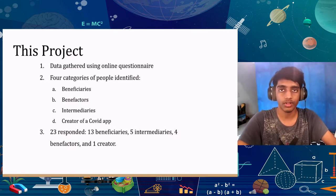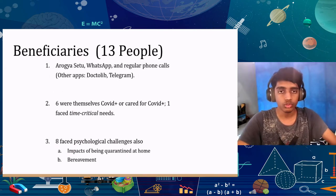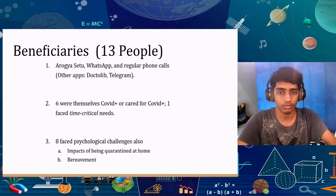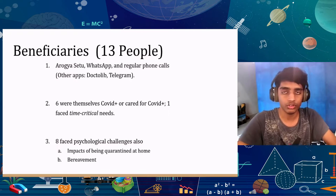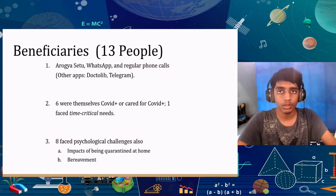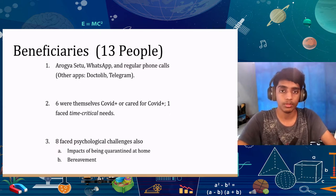Many beneficiaries mainly used Aarogya Setu, WhatsApp, and regular phone calls to communicate. Some even used apps such as Dr. Lib and Telegram. Six of these beneficiaries were either COVID positive or cared for someone who was. Only one faced a time-critical medical need — finding out about the virus and precautions. More than medical need, many faced psychological challenges as they were stuck at home, couldn't meet friends and family members, and even couldn't attend funerals in person.